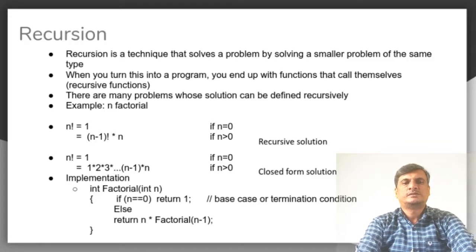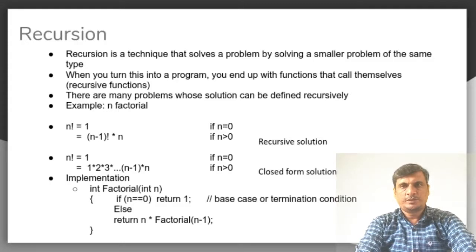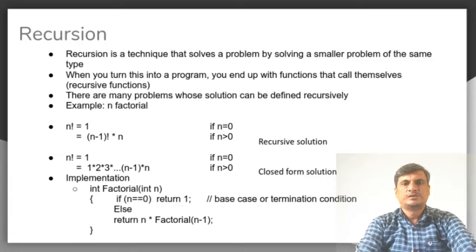We will now resume the discussion on recursion. Recursion is a programming technique that solves a problem by solving a smaller version of its own — a smaller problem of the same type. When you turn this into a program, you end up with a function that calls itself. Generally, a recursive function refers to a function which calls itself, either directly or indirectly.